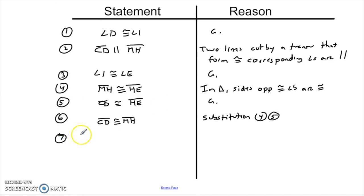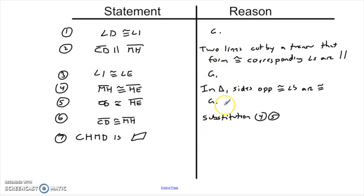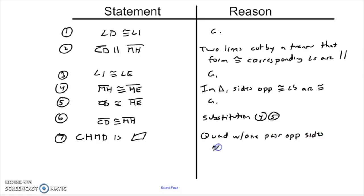CHMD is a parallelogram — I never write the word out, I just draw a little picture; it's a really long word and hard to spell. My reason: a quadrilateral — because that's what this was beforehand — with one pair of opposite sides congruent and parallel is a parallelogram. So a quadrilateral with one pair of opposite sides that is both congruent and parallel is a parallelogram.